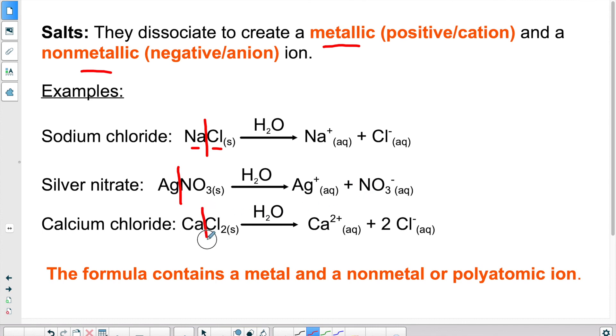CaCl2 splits in two. So metallic, non-metallic. The metallic part is calcium that carries a charge of plus two. And we have two chlorines. So they will again separate into two atoms of chlorine, each one carrying a charge of minus one.